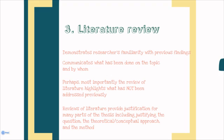The literature review is an incredibly important part of any research study. Among the things that a literature review accomplishes is it demonstrates the researcher's familiarity with previous findings. It communicates what has been done on a topic and by whom, and perhaps more importantly, the review of literature can highlight what has not been addressed in the previous literature. Reviews of literature provide justification for many parts of your thesis, including justifying the question, but also explaining and justifying your theoretical conceptual approach, your method, and other aspects of your thesis. Don't just wing one — realize that you can find whole books on how to do a literature review. Conducting secondary research prior to primary research is a very important part of our whole scientific method.